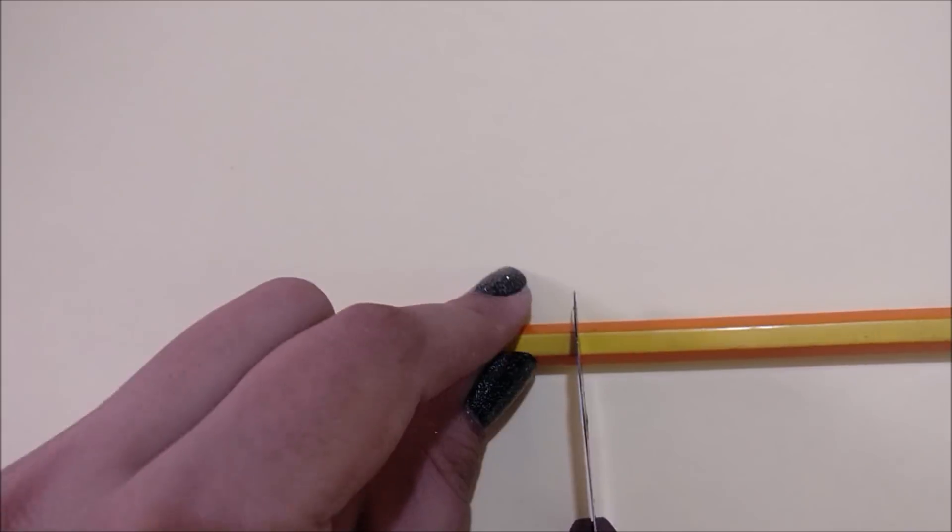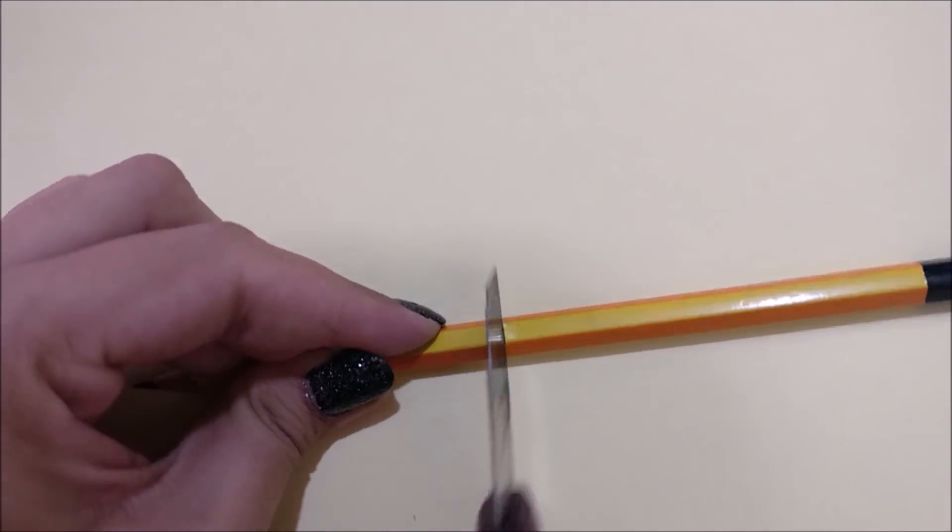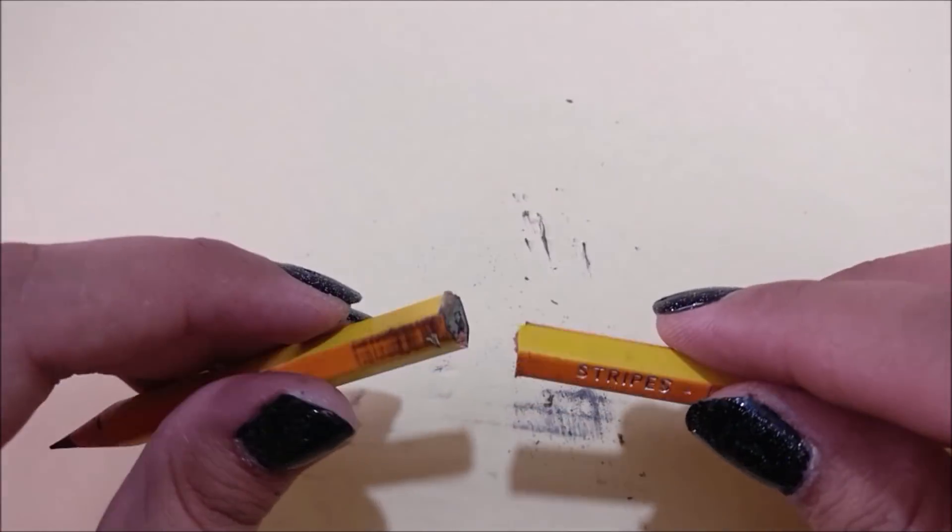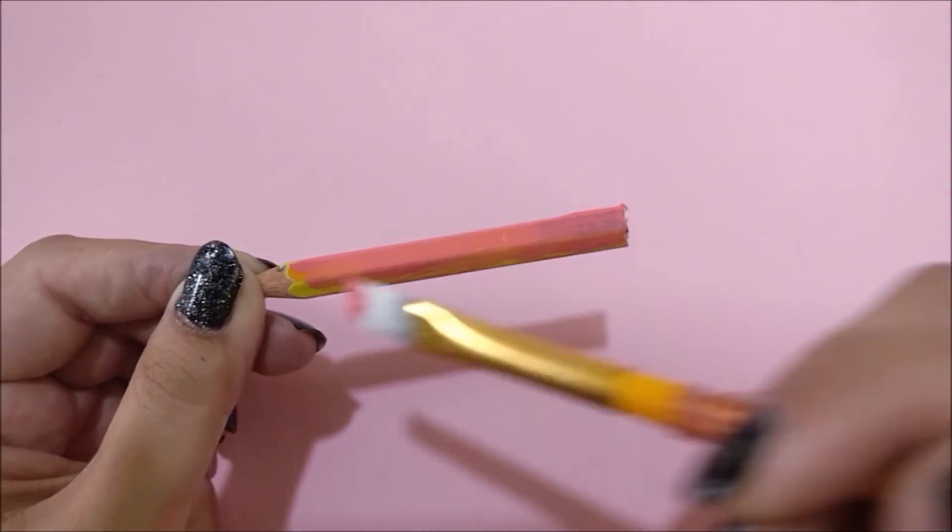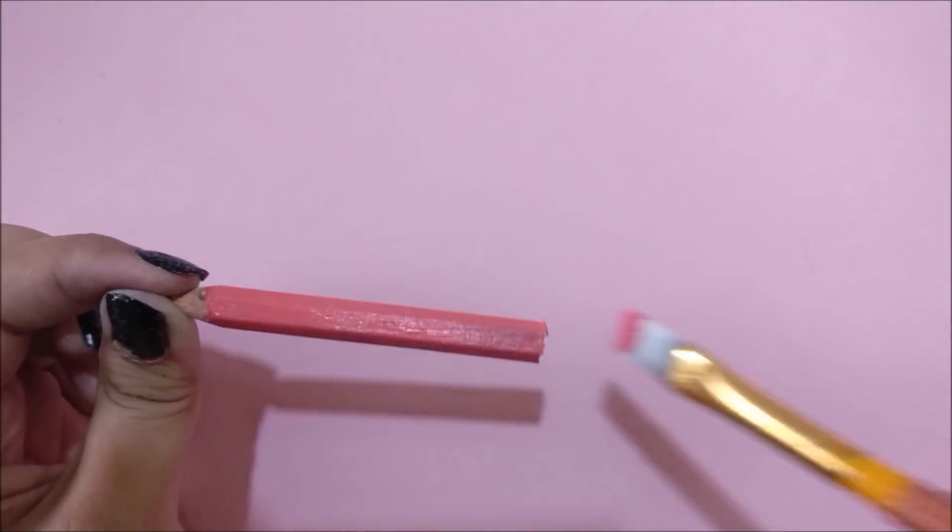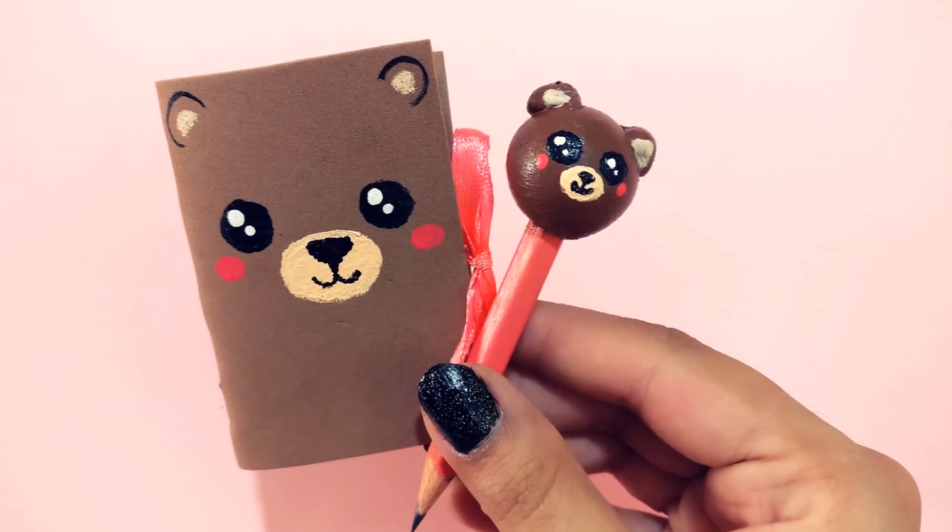Tip number two: if you don't find a similar pencil, then cut off the pencil you have with the help of a knife, and then color it using acrylic paint of your choice. I hope these tips will help you to make your own adorable mini notebook and pencil.